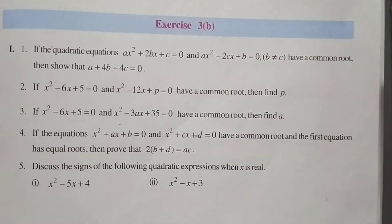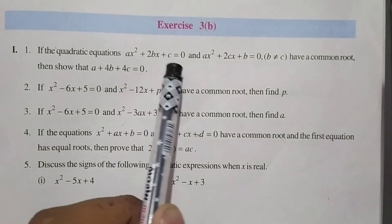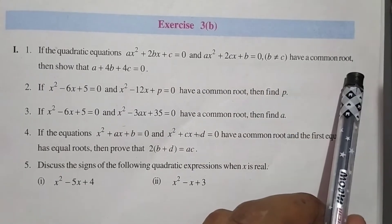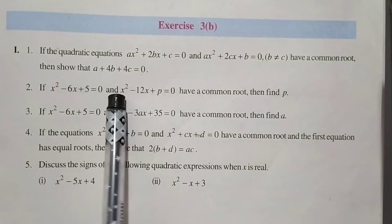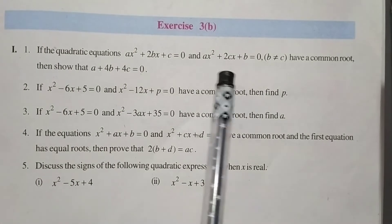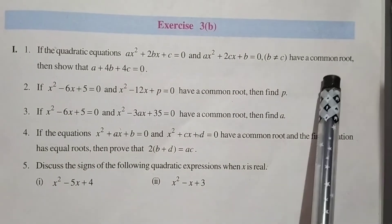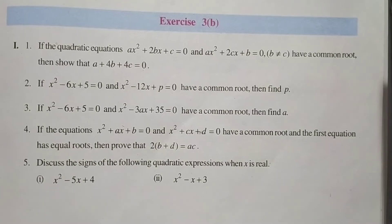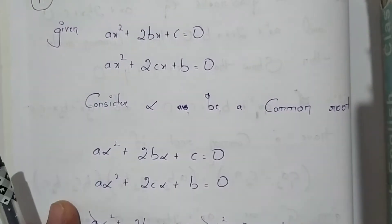Hello guys, in this video we will solve the question: if the quadratic equation ax² + 2bx + c = 0 and ax² + 2cx + b = 0 have a common root, then we need to show that a + 4b + 4c = 0. The two equations given are these two, and the question says that these two equations have a common root.